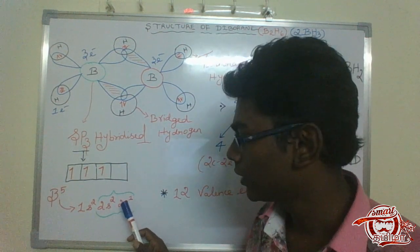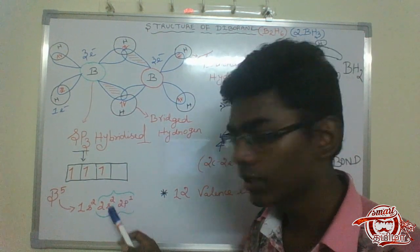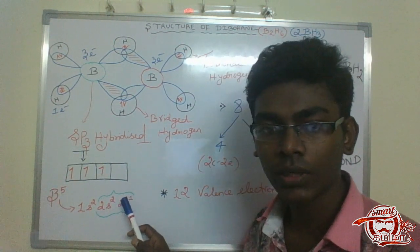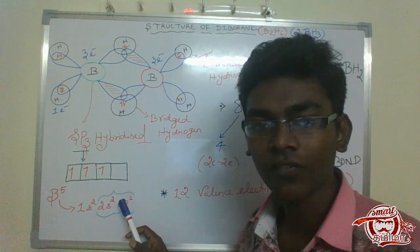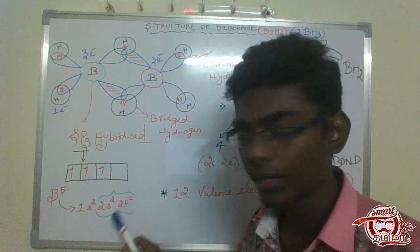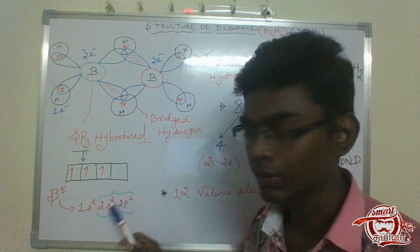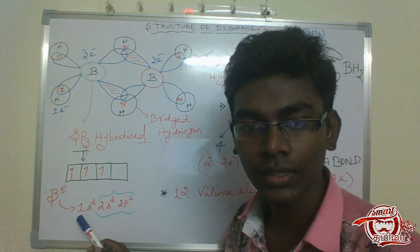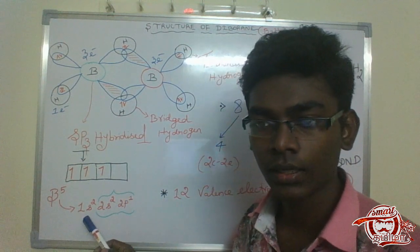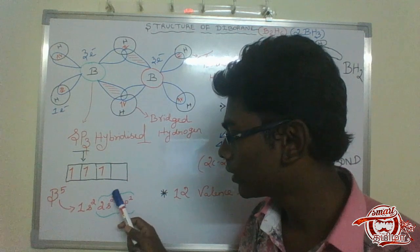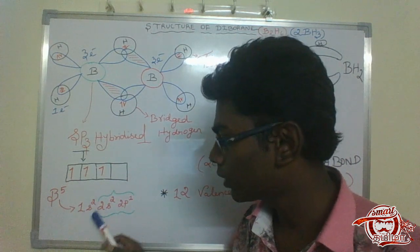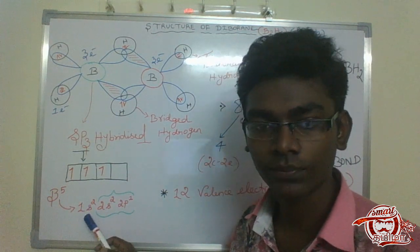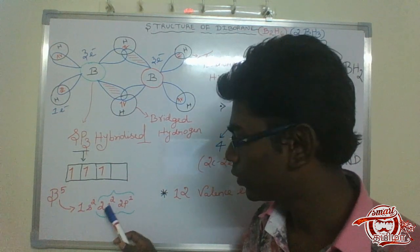If it is involved in bond formation and bond breakage, this is a very important thing. In the example, 1s2, 2s2, 2p1 are the valence electrons involved.